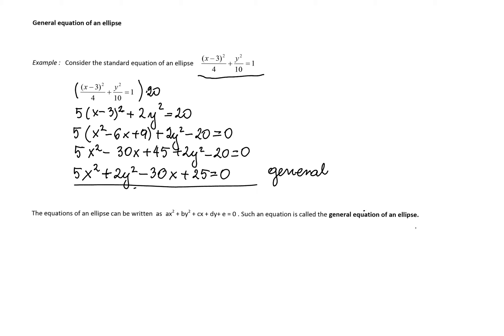Combining like terms in the decreasing order of the exponents will give 5x² + 2y² - 30x + 25 = 0. So this equation is called the general equation of the ellipse. This is the same equation as above only in different form.